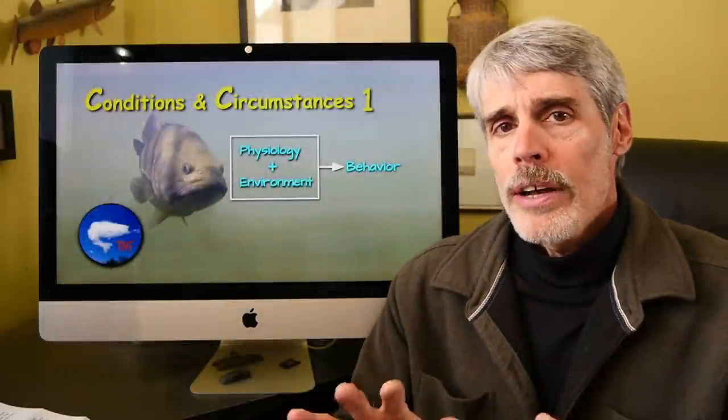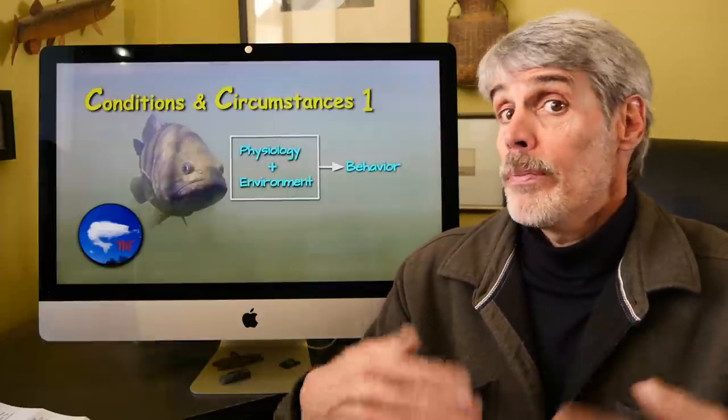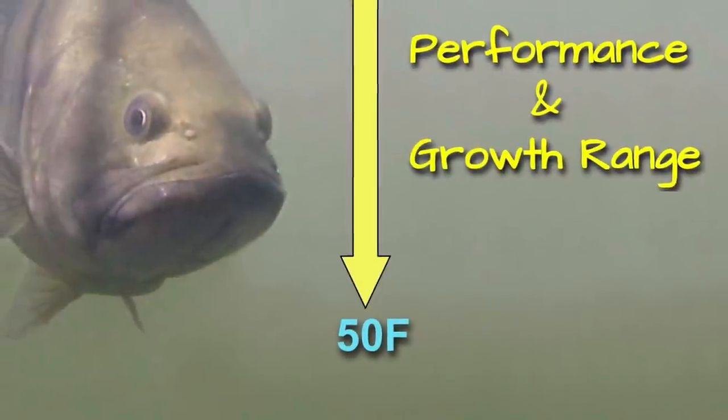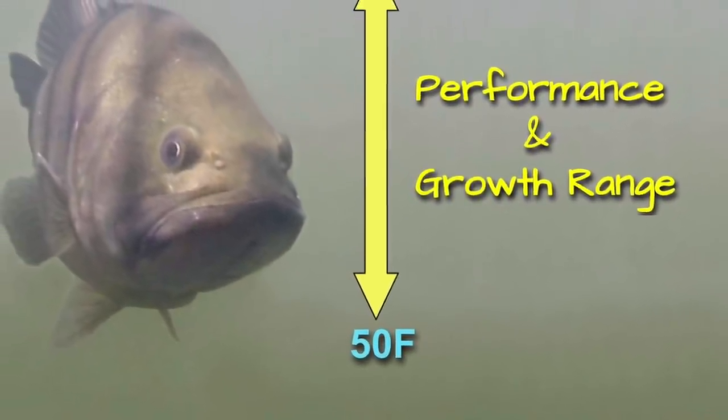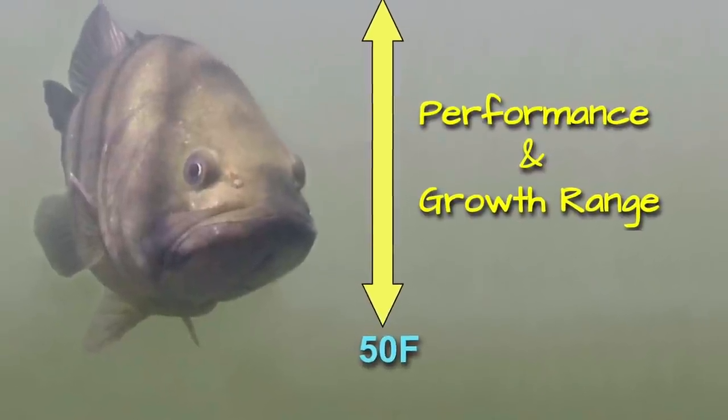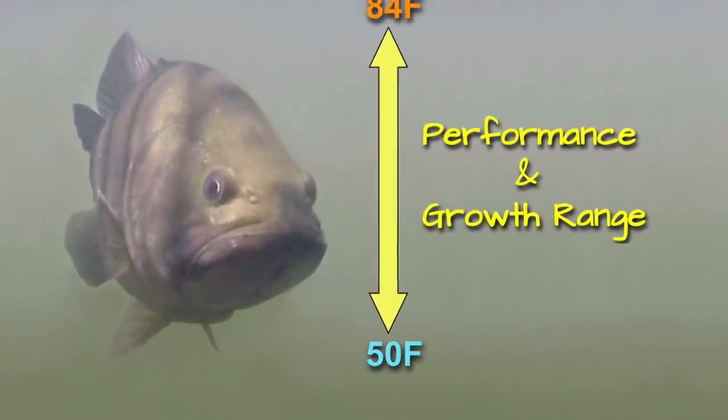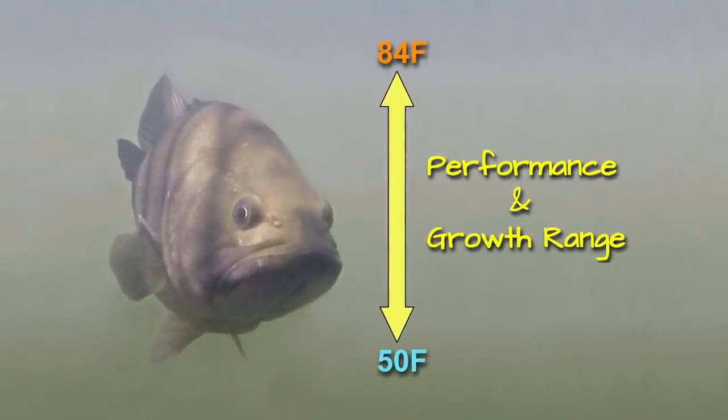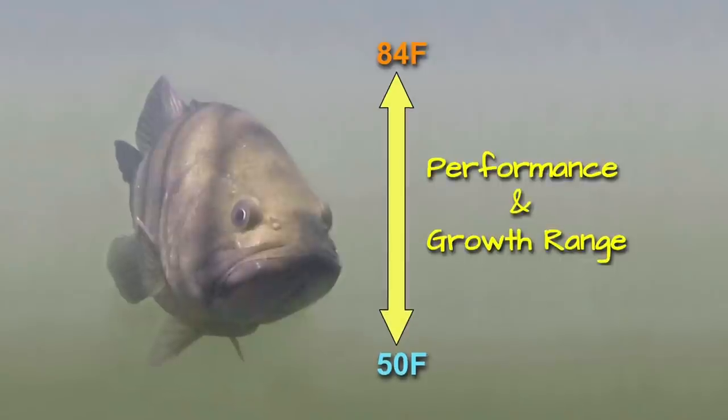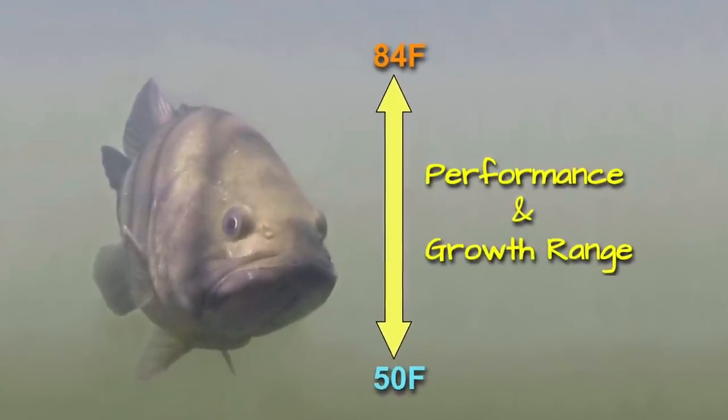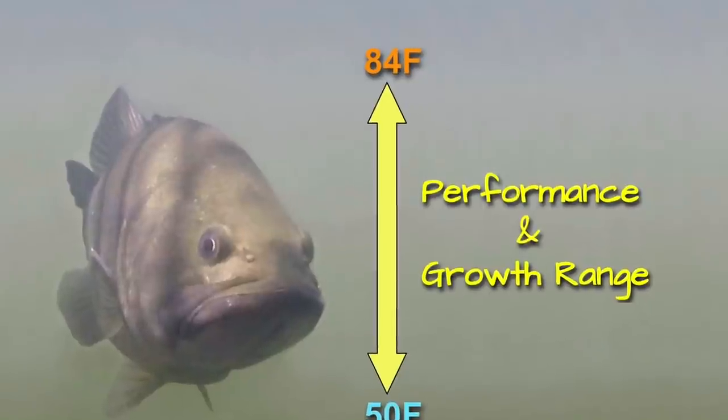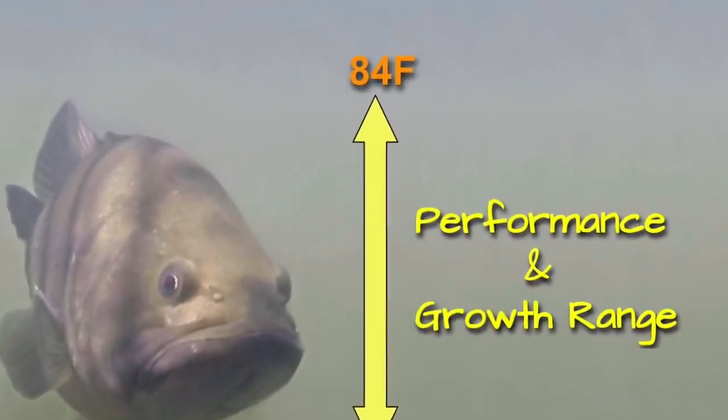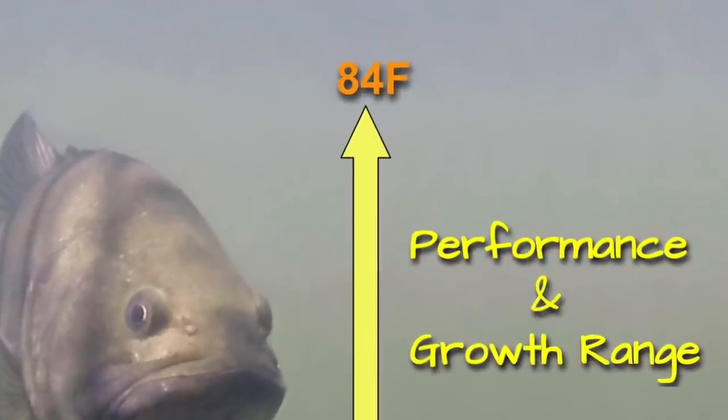The first well-documented threshold temperature for largemouth bass, the species we've been focusing on, is the 50 degree Fahrenheit or 10 degree Centigrade mark, a known threshold below which largemouths from all latitudes apparently show a marked decrease in performance capabilities, their activity and growth. There's also an upper threshold temperature in the low to mid-80s at which largemouth bass's metabolic engine is running at full steam, offering the potential for peak performance and growth.